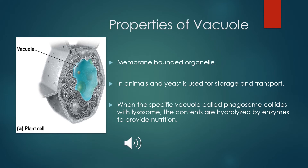The properties of the vacuole. The vacuole is a membrane-bound organelle. In animals and yeast, vacuoles are used as storage or as means of transport. While in protozoa, there are specialized vacuoles called phagosomes that fuse with a lysosome. In this way, nutrients are hydrolyzed by enzymes that feed the cell of protozoa.